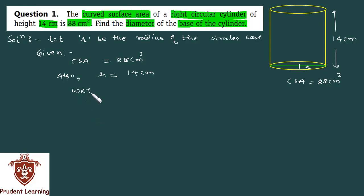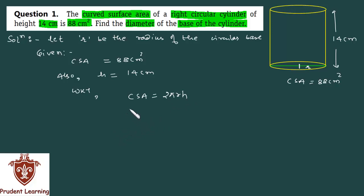We know that the curved surface area of a right circular cylinder is 2πrh. So, this formula is 2πrh, and we know the value of the curved surface area is 88. So, I will equate both of them: 2πrh equals 88.